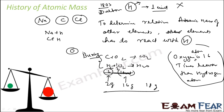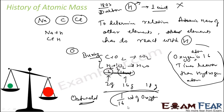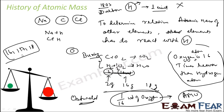Since oxygen reacts with so many substances, oxygen was taken as the base. Ostwald recommended 1/16 weight of oxygen to be the standard unit of atomic mass. So 1/16 weight of oxygen became the reference, and all other atomic masses were found. But a problem arose: science progressed and it was found that oxygen has three isotopes — O16, O17, and O18.